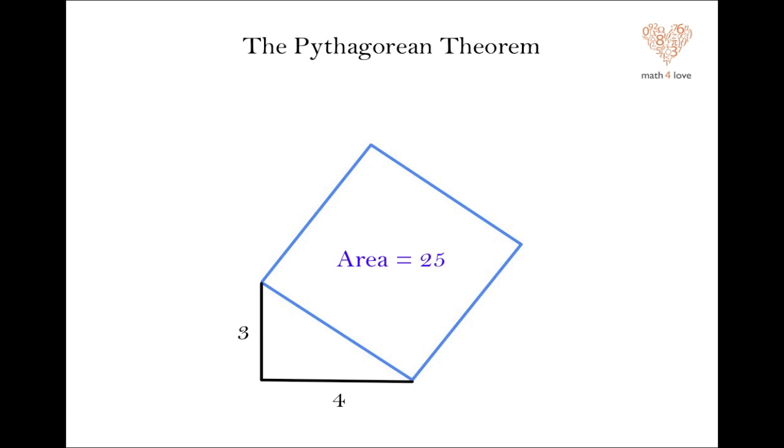And actually, we get something else from that, which is, if you have a square that has area twenty-five, we actually know how big the sides are. It must be a five by five square. So this is pretty cool. Not only can you get the area of the square, you can actually figure out how long that length is, which is actually one of the most important things about the theorem.